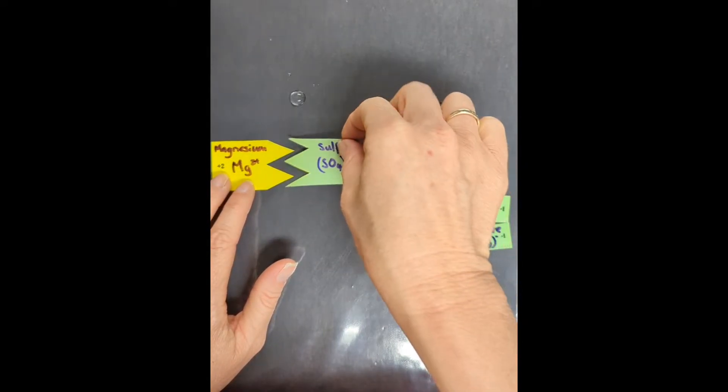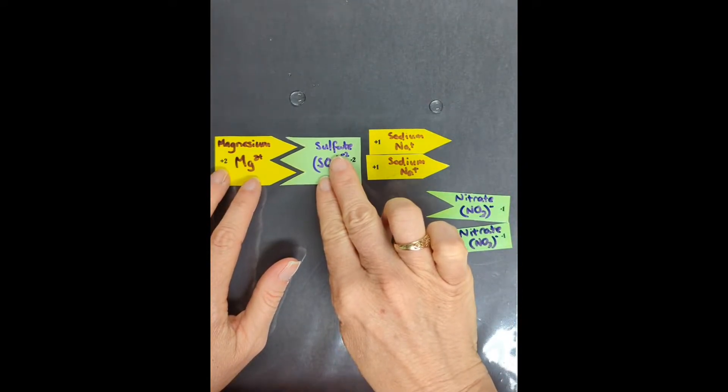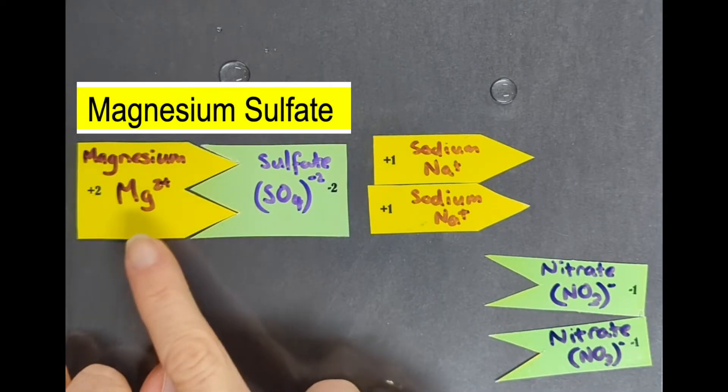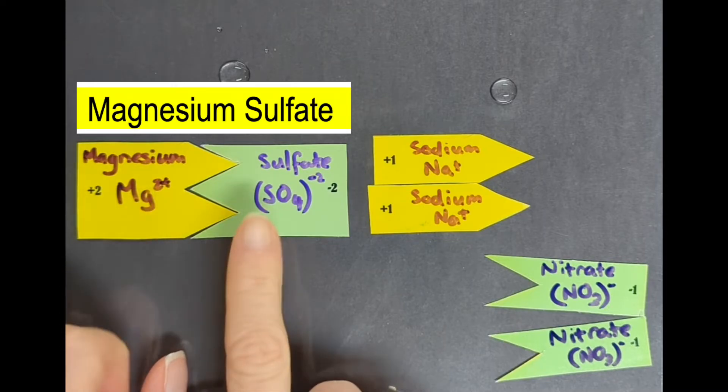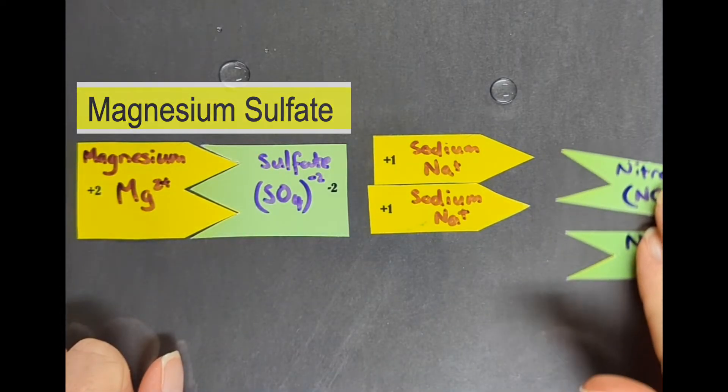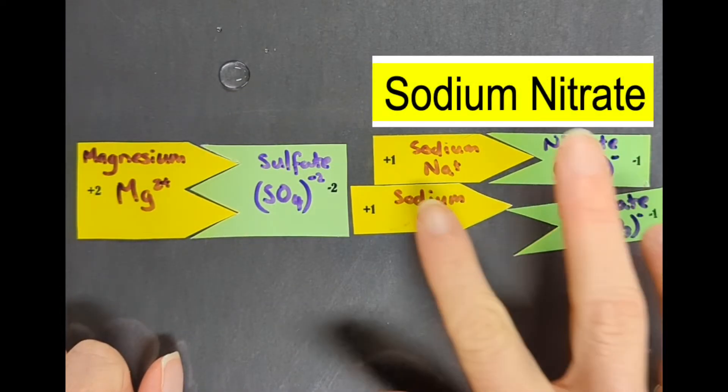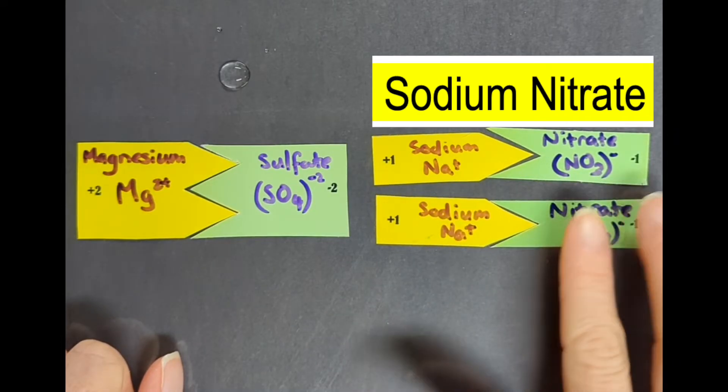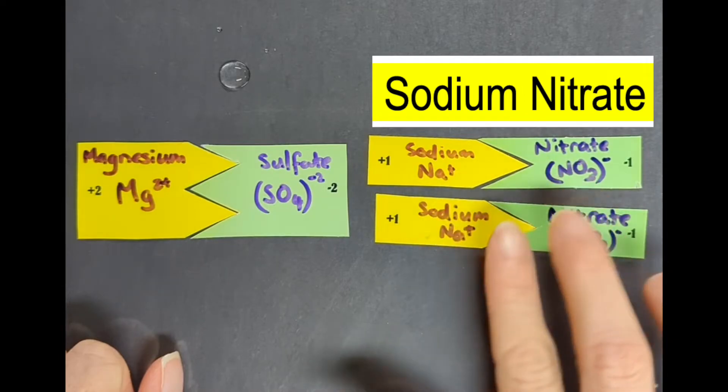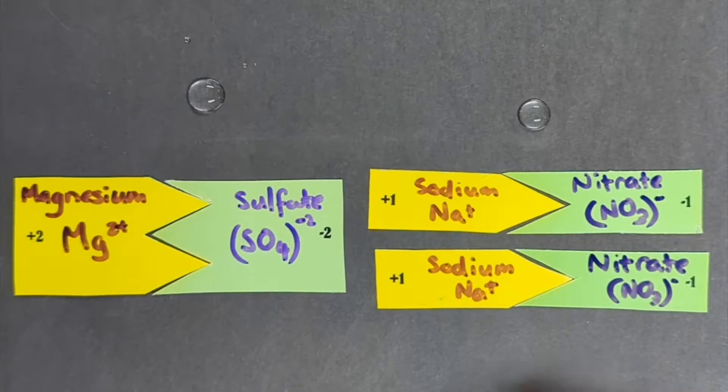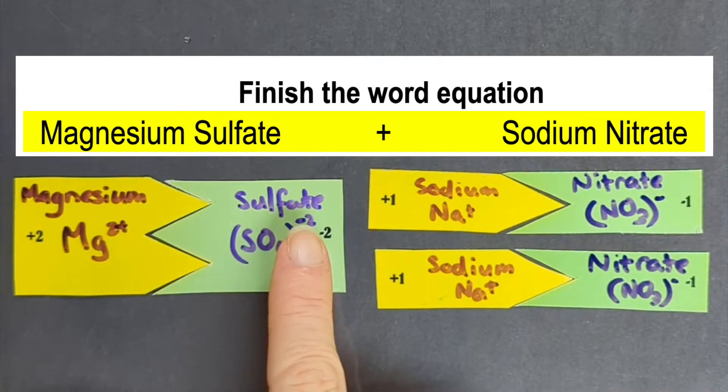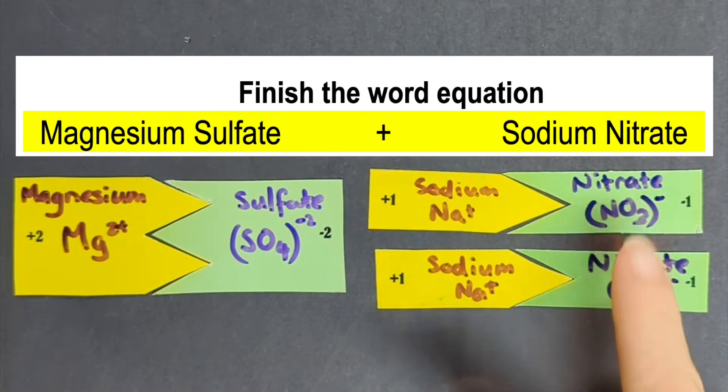These partners here are going to split and move over to here, and this partner over here is going to split and come over to here. So theoretically, the magnesium could combine with the sulfate to cancel out perfectly because you've got two plus and two minus. And the sodium could combine with the nitrate. And again, they'll cancel each other out because each one is worth plus and minus one. So your theoretical products would be magnesium sulfate and sodium nitrate.